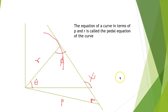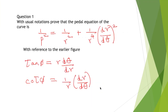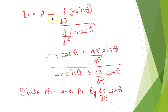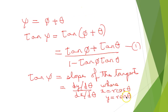Now tan ψ is the slope of the tangent, because slope is defined as the angle made by a line with the positive direction of the x-axis. So slope is given by dy/dx. Here x = r cos θ and y = r sin θ, that is the polar representation. Because the parameter is θ, it is (dy/dθ)/(dx/dθ).